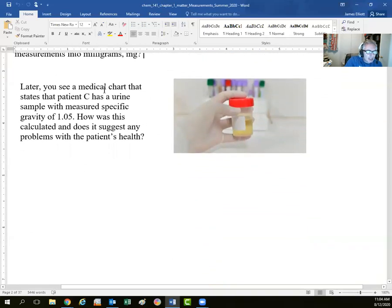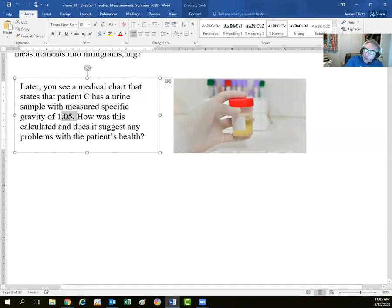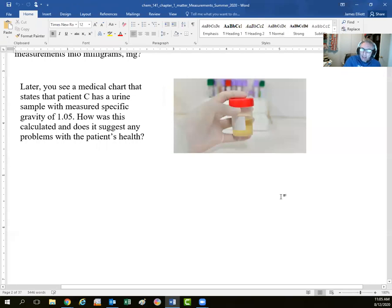The courts in both North America and Europe are filled with cases where people didn't get enough of a drug or got way too much because someone couldn't do a simple metric conversion. Later on, you see a medical chart for a patient and a urine sample has a specific gravity measured at 1.05. How was this calculated and what would this suggest about the patient? Is this a healthy value?